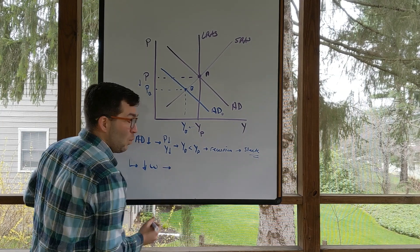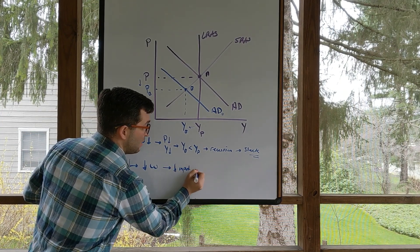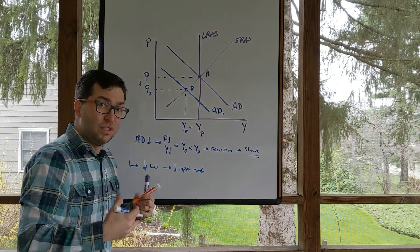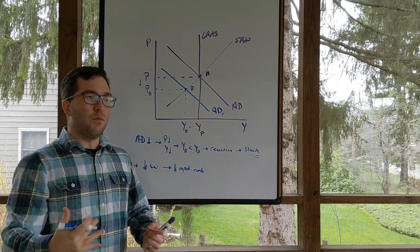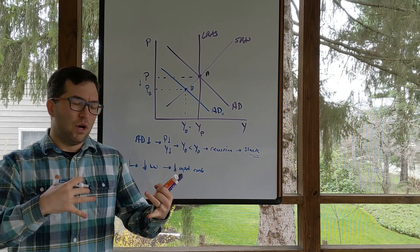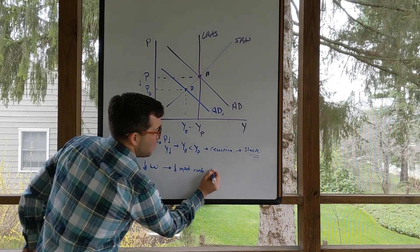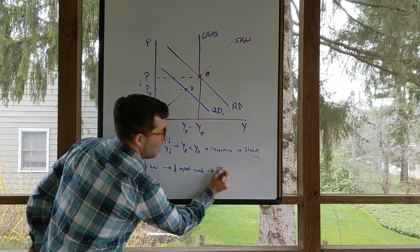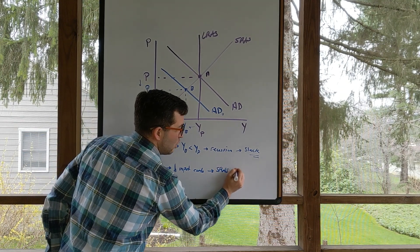These downward pressures on wages will decrease the overall input costs. It will also decrease the overall expected future price level. Because if wages are going down and firms are going to have to start accepting lower prices for their products, we're going to start to see that price level drop. This will then lead to that short-run aggregate supply curve going to the right.